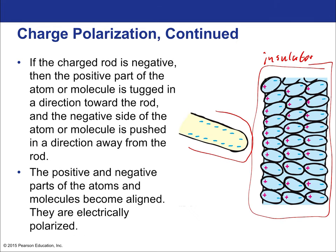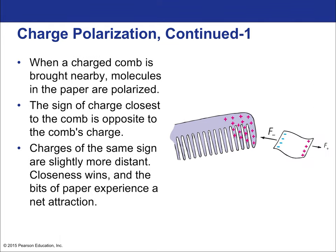In a conductor, all the free electrons move some macroscopic distance away. But in an insulator, since electrons are not free to move, they remain trapped within their individual atoms, which still become polarized if the nearby charge is strong enough. When a charged comb is brought nearby, molecules in paper are polarized. The sign of charge closest to the comb is opposite to the comb's charge, and the like charges are slightly more distant—so the attractive force is bigger than the repulsive force, and the paper is pulled toward the comb.